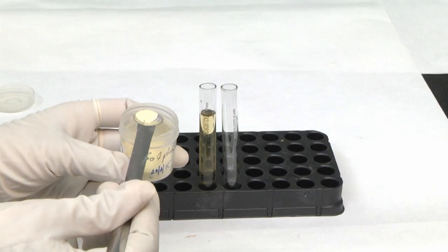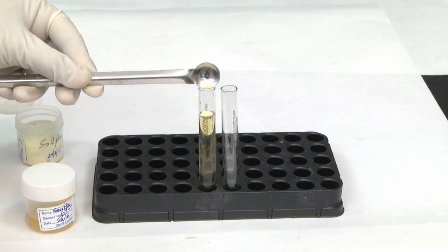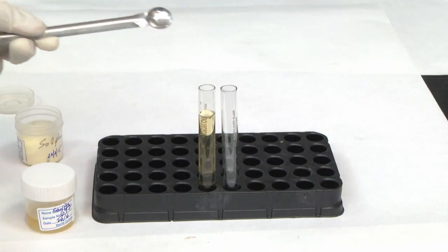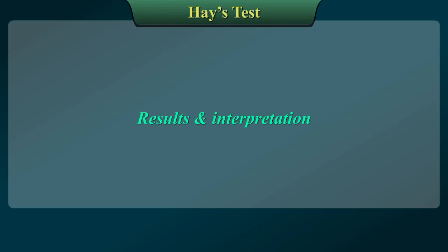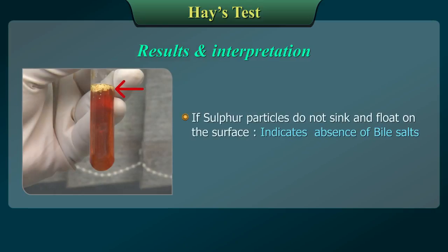Add or sprinkle dry sulphur powder gently onto the surface and observe the particles. Results and Interpretation: If sulphur particles sink to the bottom of the test tube, it indicates the presence of bile salts in the urine sample. If sulphur particles do not sink and float on the surface, it indicates the absence of bile salts.